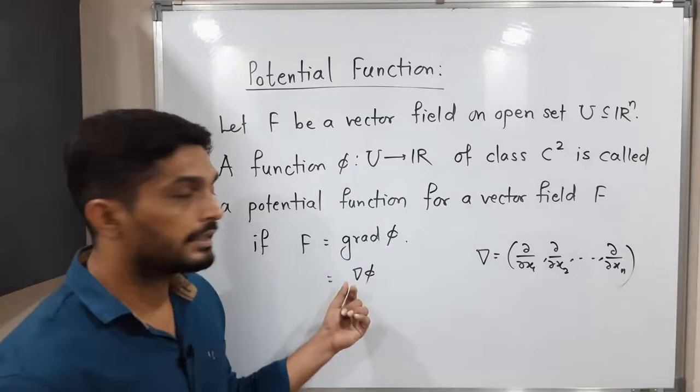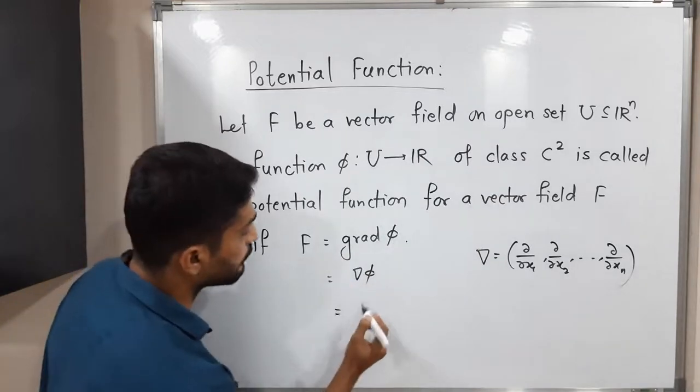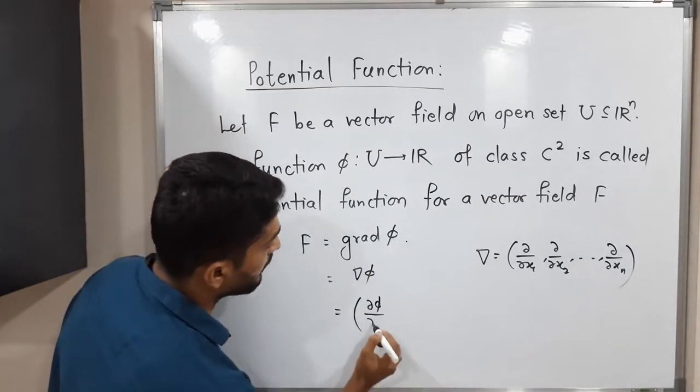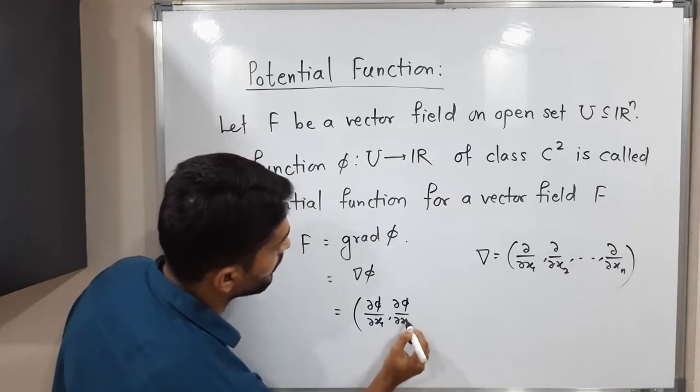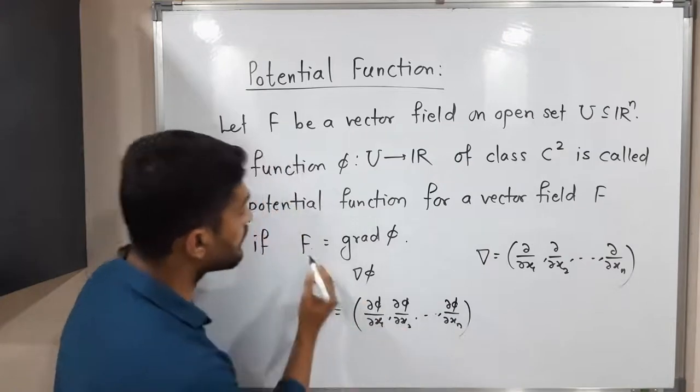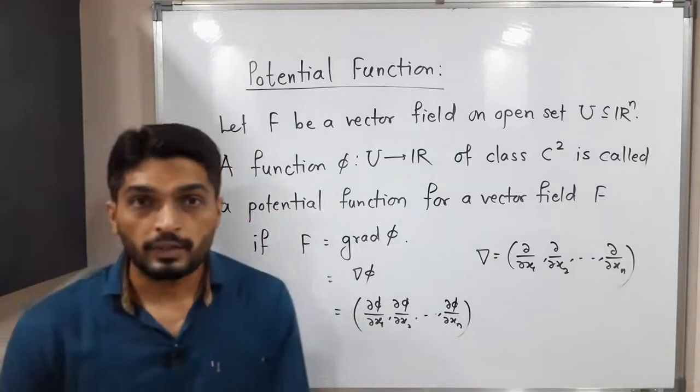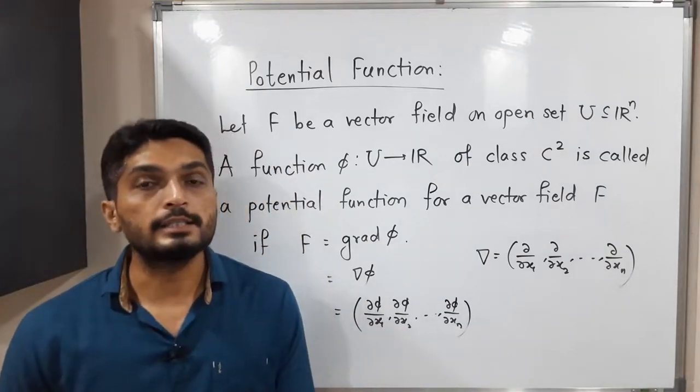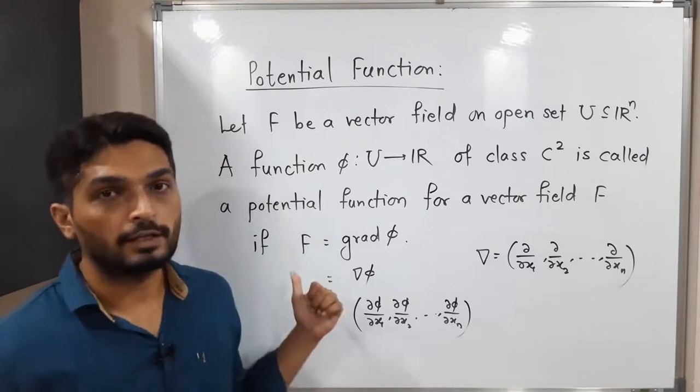So if this del phi - that means if you expand it, you will have like this: ∂phi/∂x₁, ∂phi/∂x₂, and so on, ∂phi/∂xₙ. If it is equal to given vector field F, then we say phi is potential function of vector field F.